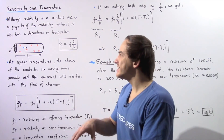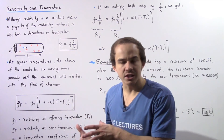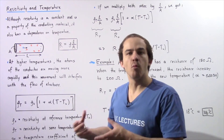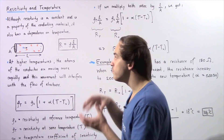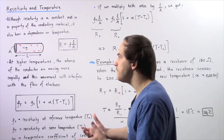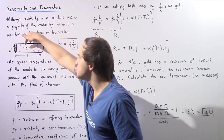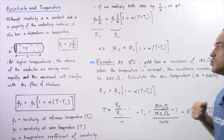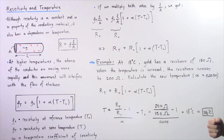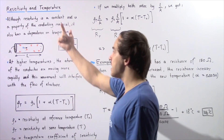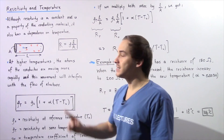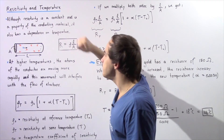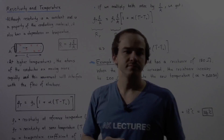So once again, because when the temperature increases the molecules within our conducting material move more violently, that movement of those molecules interferes with the motion of our electrons and impedes their flow. So we see that at higher temperatures, our resistance is higher because our resistivity is higher.